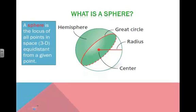A sphere is nothing more than the locus of all the points in space, three-dimensional space, that are equidistant from a given point. If you have a given point here and you go out the same distance in every direction from this point, you would create the points on a sphere.